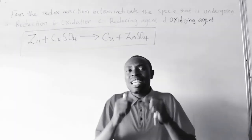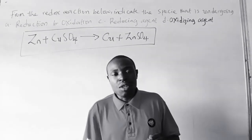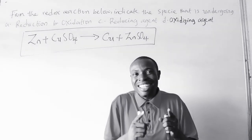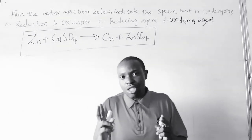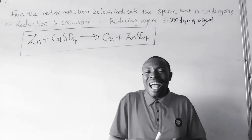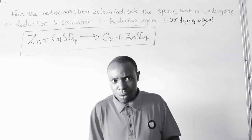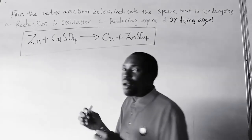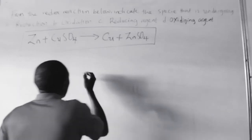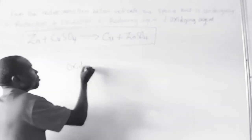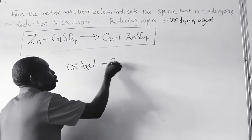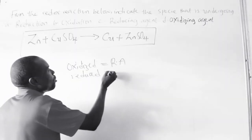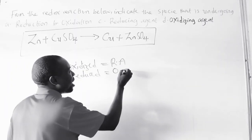The opposite of what I just said for the oxidizing agent applies to the reducing agent. In the case of a reducing agent, it undergoes loss of electrons and is oxidized in the reaction — it is an electron donor. For any species to be oxidized, it will be called a reducing agent. And for any species to be reduced, it will be called an oxidizing agent.